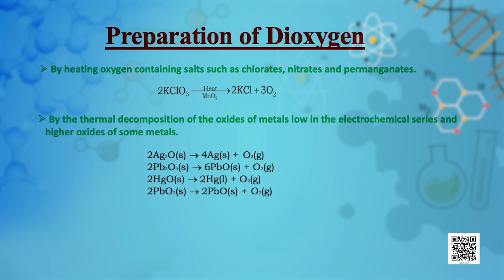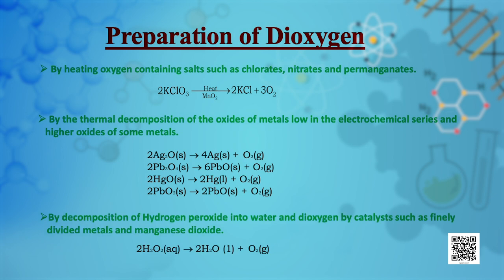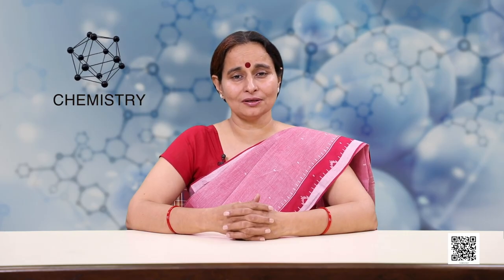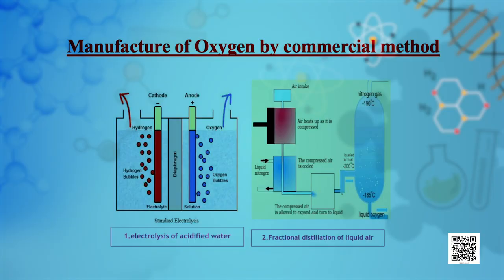Oxygen can also be prepared by the thermal decomposition of oxides of metals low in the electrochemical series, and from higher oxides of some metals. Another method involves the decomposition of hydrogen peroxide into water and dioxygen in the presence of a catalyst such as finely divided metals or manganese dioxide. On a large scale, it can be prepared from water by electrolysis, which releases hydrogen at the cathode and oxygen at the anode.